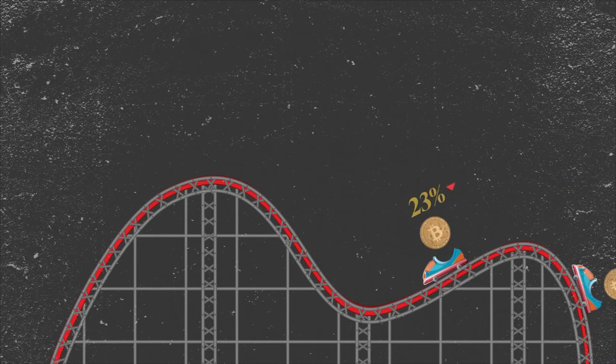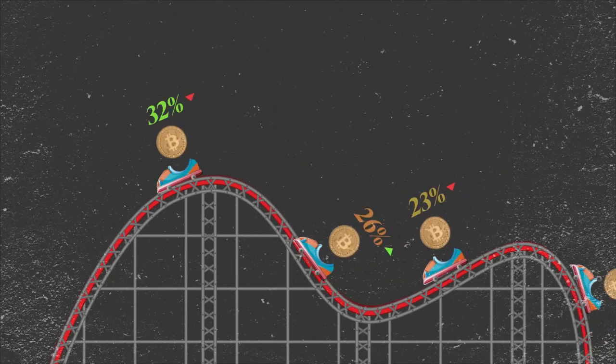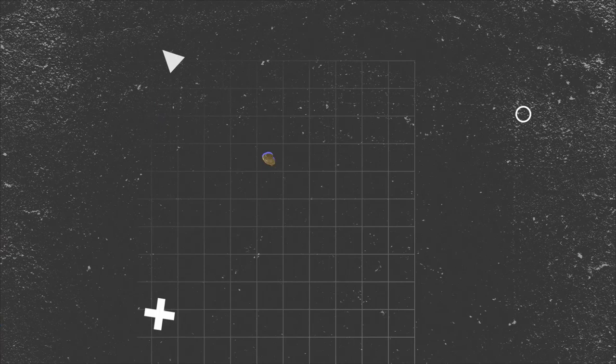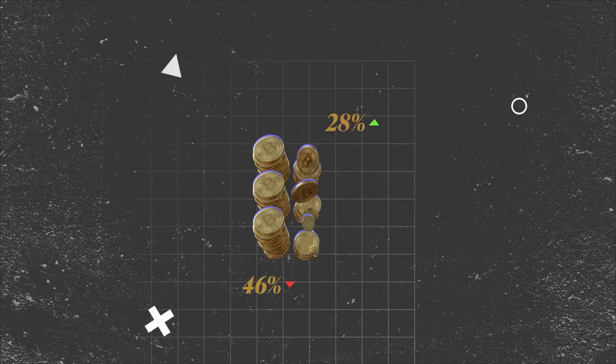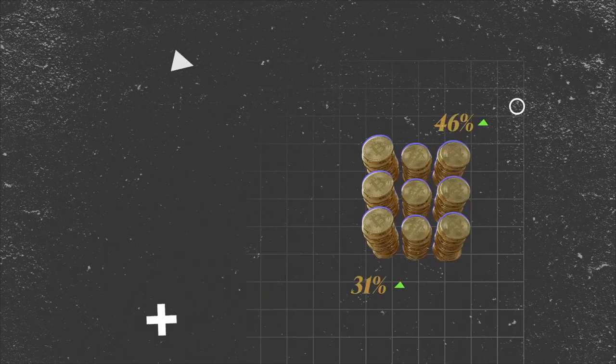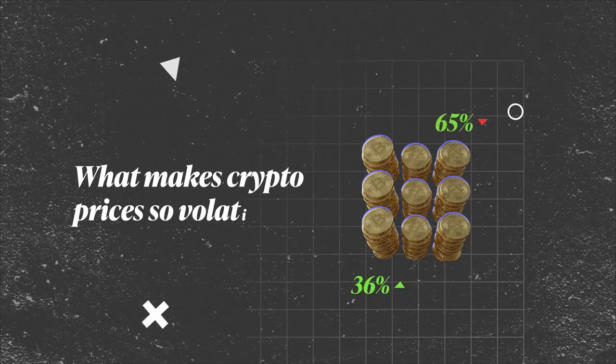Crypto natives and investors are no strangers to the roller coaster ride that is the crypto market. Popular cryptocurrencies can fluctuate 10, 20, even 30% within a regular trading day. But what makes crypto prices so volatile?